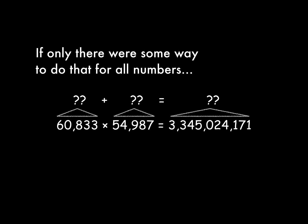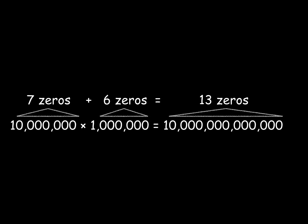That is the thing that our friend Jost figured out a way to do. To see how we might have gotten there, let's think about why counting zeros works for multiplying powers of 10. When you're counting zeros, what you're really doing is counting tens multiplied together, like this.